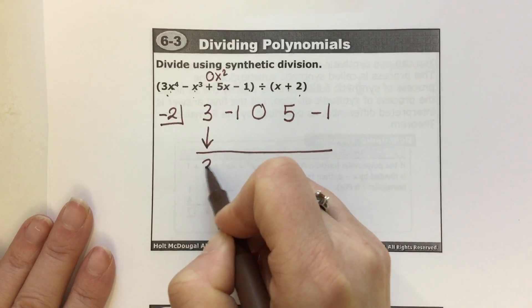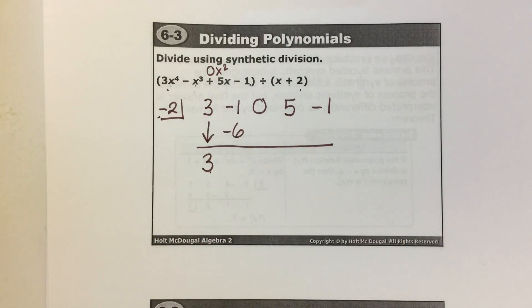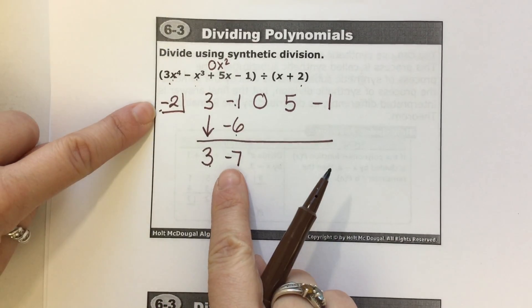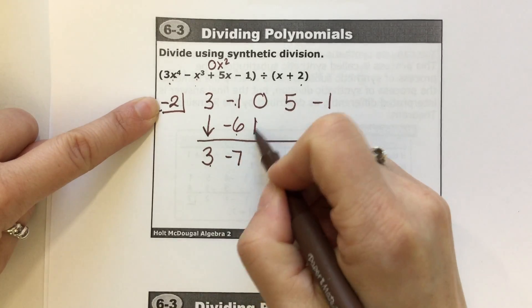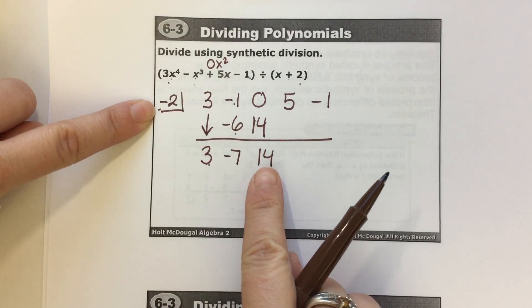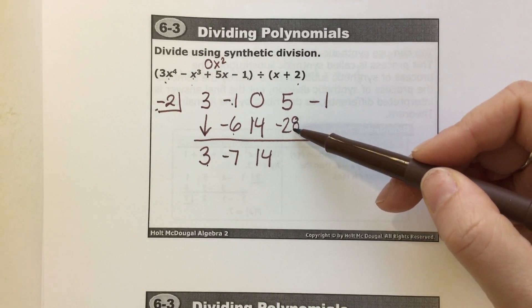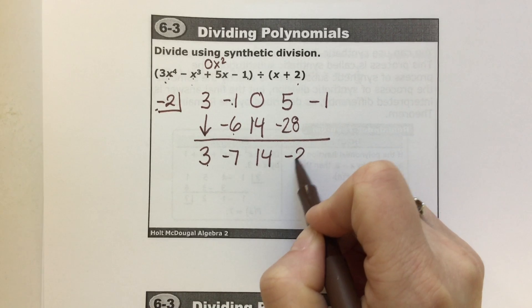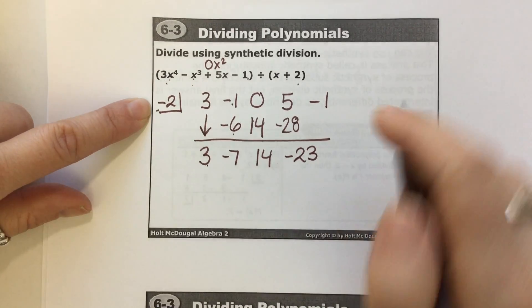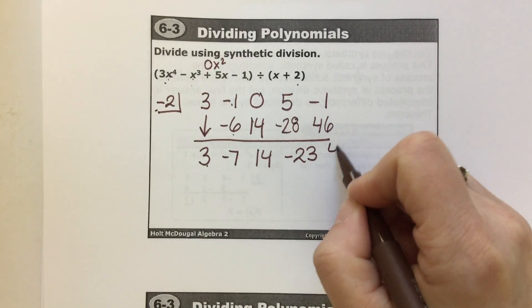3 times negative 2 is negative 6. Add: negative 1 plus negative 6 is negative 7. Multiply: negative 7 times negative 2 is 14. Add: 0 plus 14 is 14. Multiply: 14 times negative 2 is negative 28. Add: positive 5 plus negative 28 is negative 23. Multiply: negative 23 times negative 2 is positive 46. Add: negative 1 plus 46 is 45.